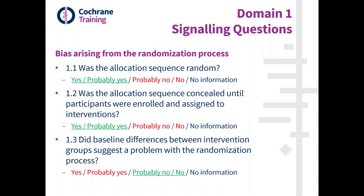Just to remind you of the signalling questions for Domain 1: the first two questions ask directly about the two main processes — generating a truly random sequence and concealing the sequence until participants are irreversibly enrolled into the trial. The third question asks whether there were substantial imbalances, clearly beyond that expected by chance, that provide evidence that the randomisation process was problematic. In most cases, the answer to this third question will be 'no' or 'probably no'. In this presentation, green underlined text represents good or low risk answers, and red text represents bad or high risk answers.